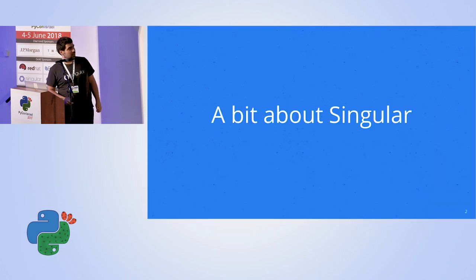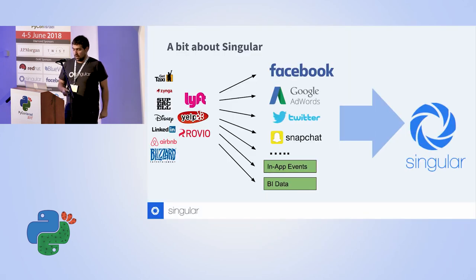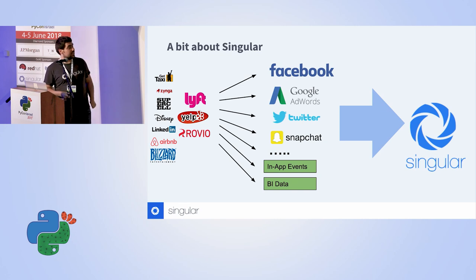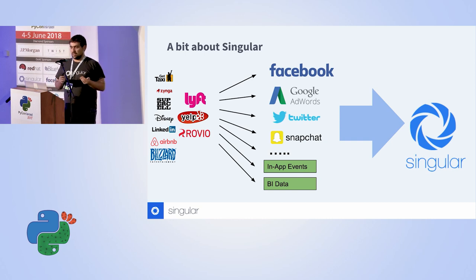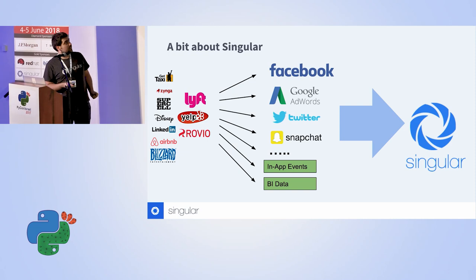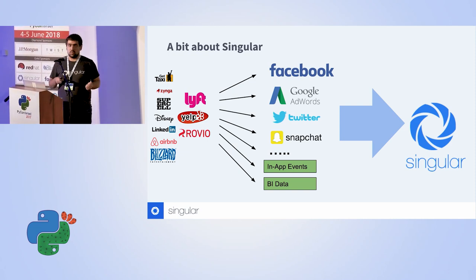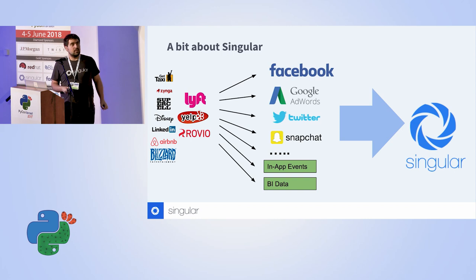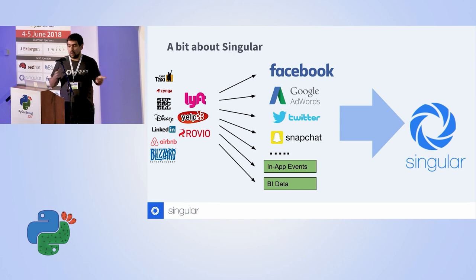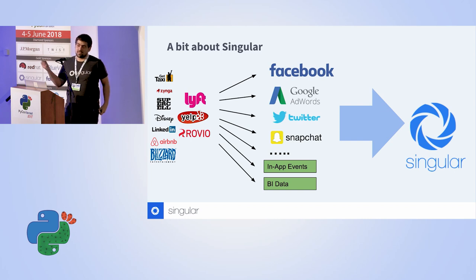I'll start with a short introduction about Singular. Basically what we do in Singular — we are an analytics company. We provide analytics for mobile marketers. Typically what they do, they advertise in many different marketing channels, especially the famous ones like Facebook, AdWords and so on. They also collect data from their internal BI and events that happen in the app. And what we try to do, we try to eventually join all that data and provide them smart analytics. If you want to hear more, we also have our booth outside, you're welcome to join.